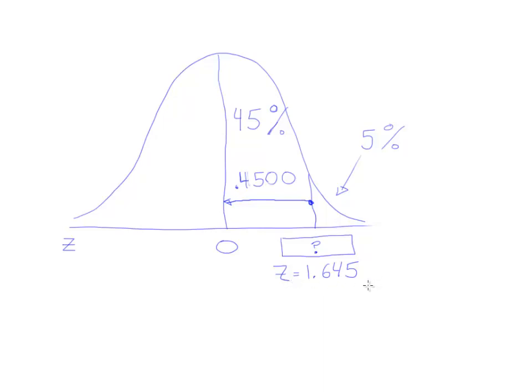What we're doing there is we're actually averaging the two z-scores because the one that was smaller was 1.64, the one that was larger was 1.65, so we would have had 1.64 plus 1.65,